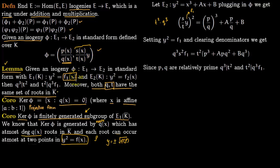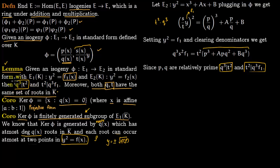Since P and Q are relatively prime by construction of the standard form, Q cannot divide P cubed. Therefore Q cubed has no choice but to divide T squared — giving us Q cubed divides T squared. Similarly, since S and T are relatively prime, T squared cannot divide the S squared term, so T squared must divide Q cubed times F1 — giving us T squared divides Q cubed times F1. That proves the first part of the lemma.